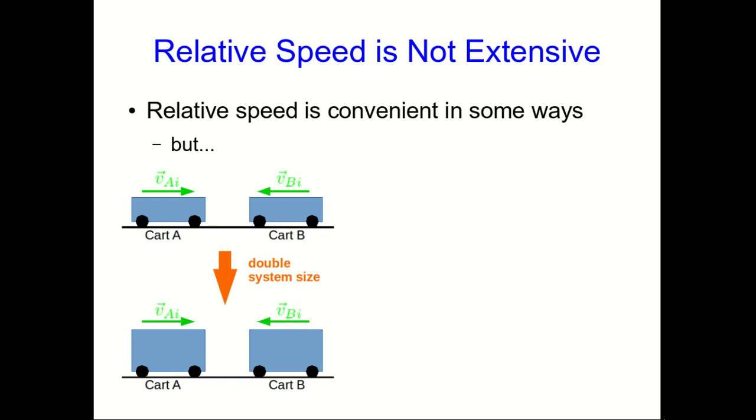Think about doubling the system size of a pair of colliding carts. When you double the system size, you have to keep everything the same except the system size, so in particular you keep their velocities the same. That means the relative speed hasn't changed when you double the system size, so relative speed isn't extensive.